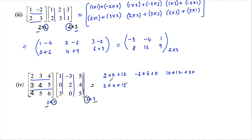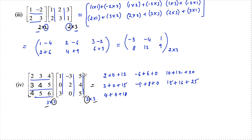Second row with second column: negative 3 into 3 is negative 9, 4 into 2 is 8, and 5 into 0 is 0. Second row with third column: 3 fives are 15, 4 fours are 16, and 5 fives are 25. Third row with first column: 4 into 1 is 4, 5 into 0 is 0, and 6 into 3 is 18. Third row with second column: 4 into negative 3 is negative 12, 5 into 2 is plus 10, and 6 into 0 is 0. Third row with third column: 4 into 5 is 20, 5 into 4 is 20, and 6 into 5 is 30.